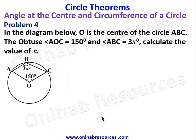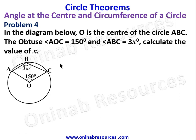For problem four, O is the center of circle ABC. The obtuse angle AOC equals 150 degrees and angle ABC equals 3x degrees. Calculate the value of x. Since angle AOC and angle ABC are both interior angles of quadrilateral ABCO, they are not directly connected with respect to angle at center. We calculate the reflex angle AOC to find x.